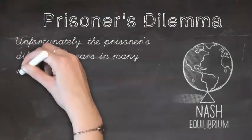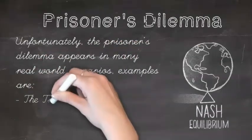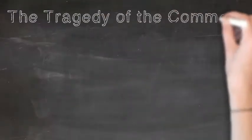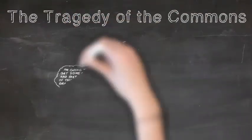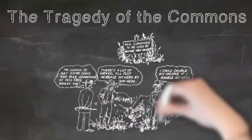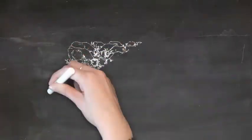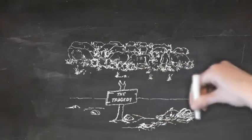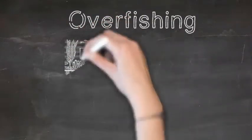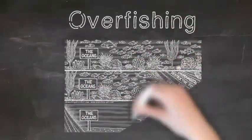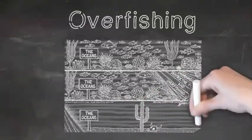Unfortunately, the prisoner's dilemma appears in many real-world scenarios. Examples are the tragedy of the commons, overfishing, and climate change. The tragedy of the commons is usually presented with this example: imagine there's a common land where all the cows can graze. Everyone can bring their cows and everyone has an individual incentive to let their cows graze a little longer. What happens then is that more and more cows graze a little bit longer and it ends up depleting the commons. A real-world contemporary example of this is overfishing — each individual fishing company has an incentive to fish a little bit more and get more profits, but if they all do, soon there will be no fish in the ocean.